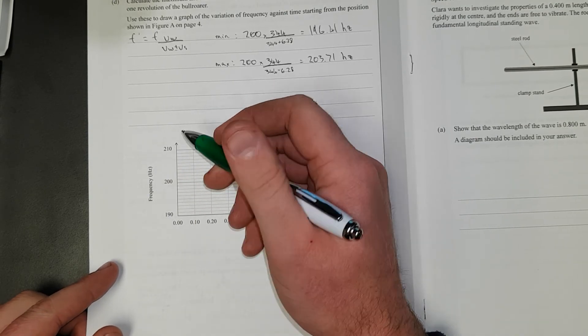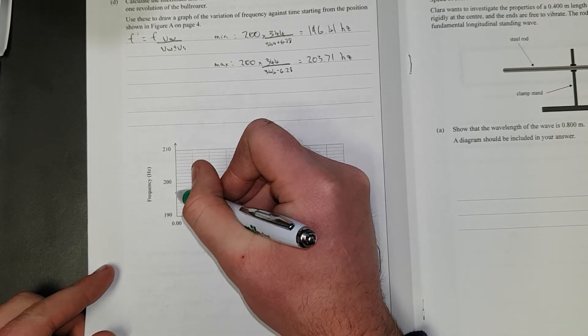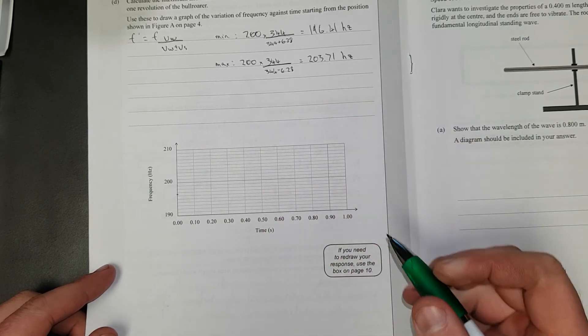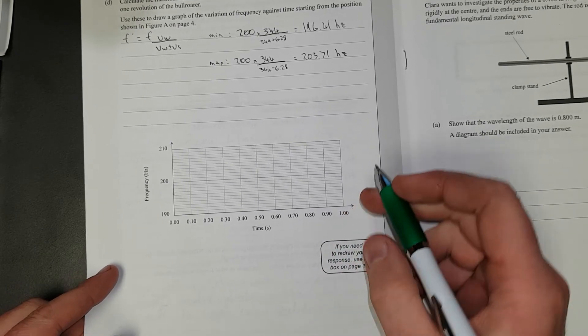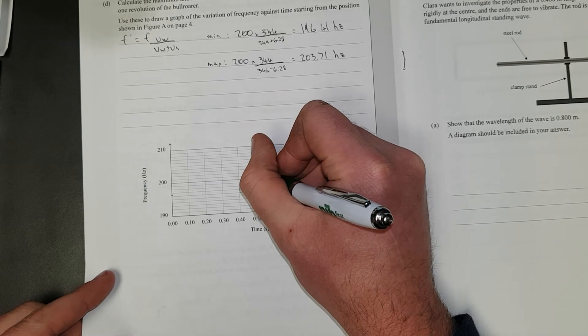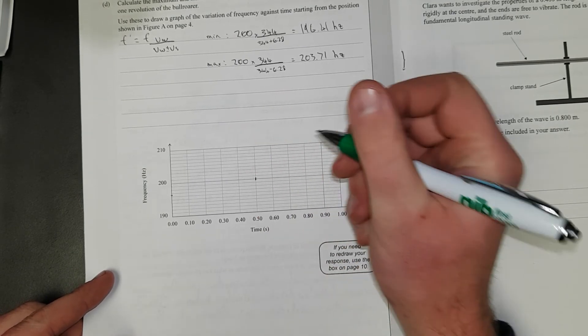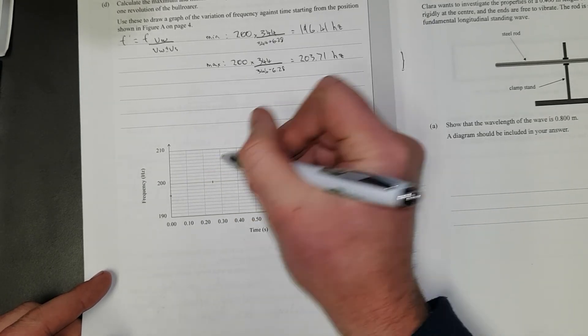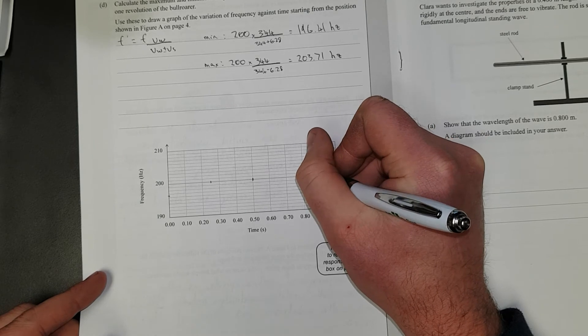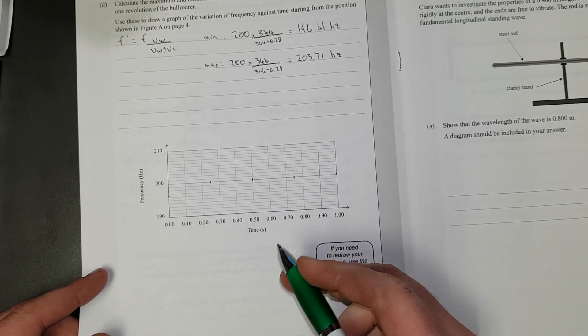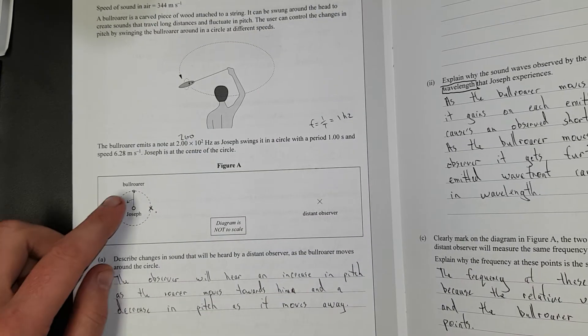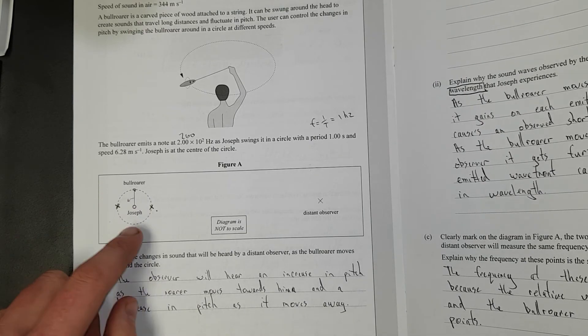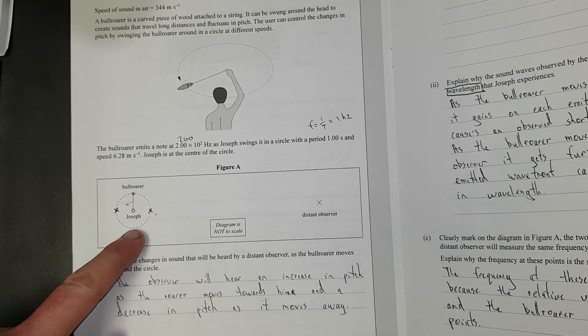One whole cycle is one second. So half a cycle is going to be here. Quarter of a cycle is going to be here. And the other quarter of the cycle is going to be 75 here. I'm going to break it into quarters. Half a second later, the bullroarer is going to be on the other side of the circle. Because it takes a whole second to get all the way around. So half a second will be on this side.